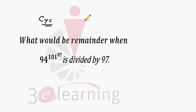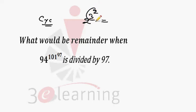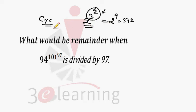If you have a power raised to power raised to power, for example 2 raised to power 3 raised to power 2, we do not start from the bottom — we start from the top. We make bundles of 2 from the top and solve. So 2 raised to power 3 raised to power 2 is just 2 raised to power 9, which is 512.